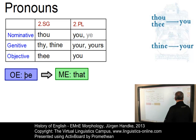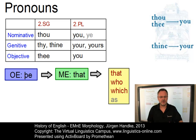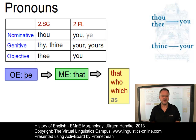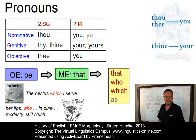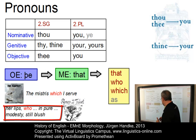The following system of relative pronouns emerged. With the exception of as as a substandard form, it was formally identical with that of present-day English, even though the use of the relative pronouns was far more flexible than today. So examples like the mistress which a serf and her lips who in pure modesty still blush would no longer be grammatical in present-day English.